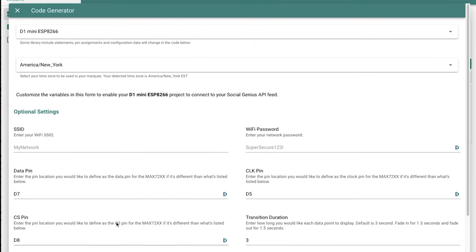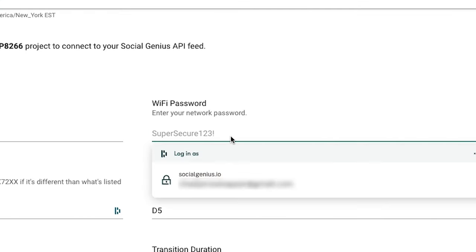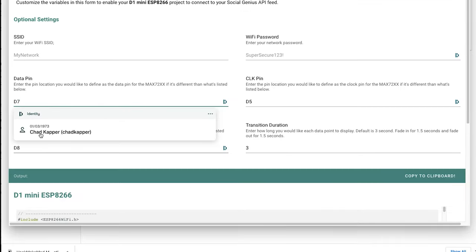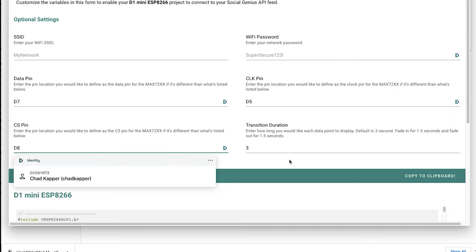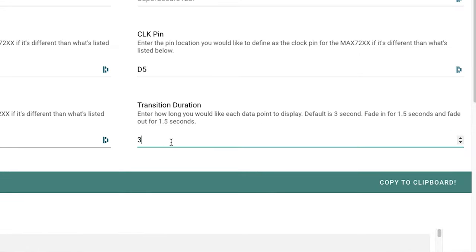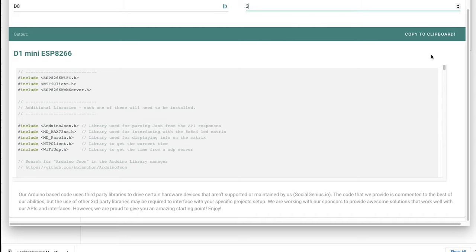And in here you have six different variables that you can adjust. But really, all you need is put in your SSID, that's the name of your home network or wherever you're going to put this, your password, and then the data pins. Now we have this preset to match the data pins that we show you in this video in our walkthroughs. So you don't have to adjust those. But if you want to customize it, you can. And then you have how long of a transition you want between each element: time, day, subscribers, and views.